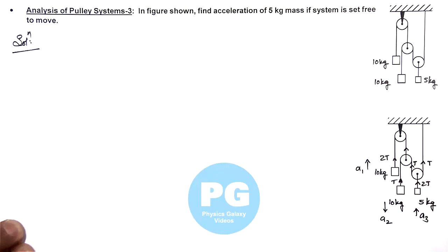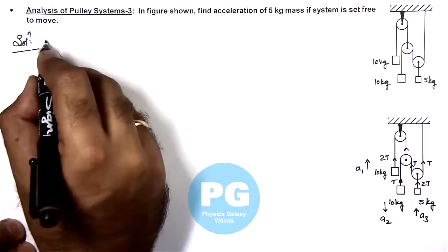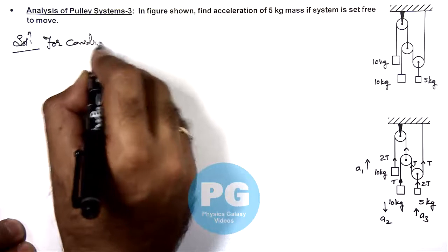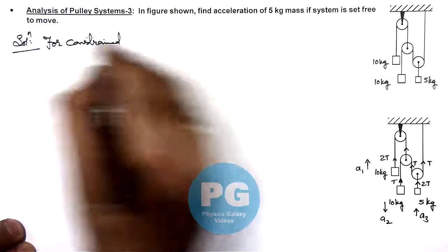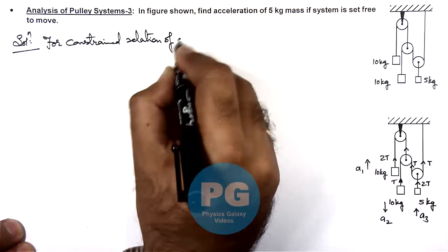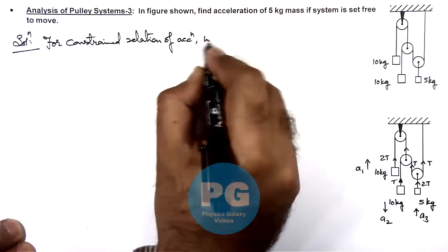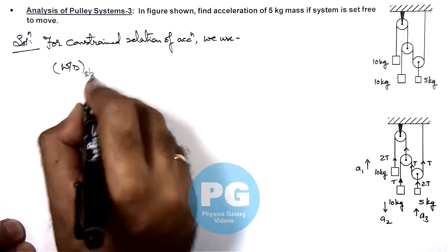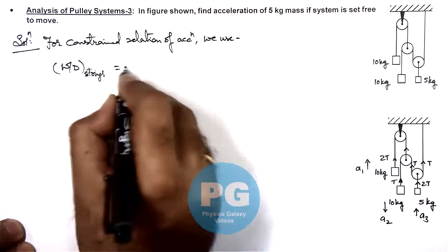So first we write down the equation of virtual work method using which we deduce a constraint relation. Here we can write, for constrained relation of accelerations here we use the total work done by all the strings in the system should be equal to zero.